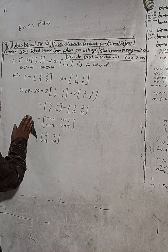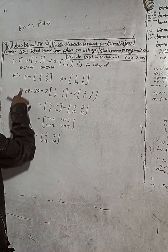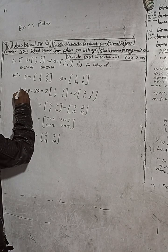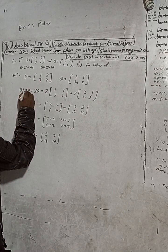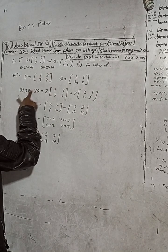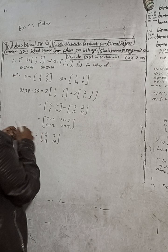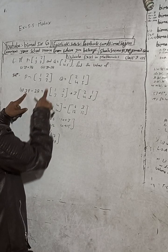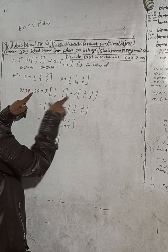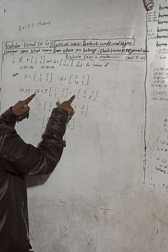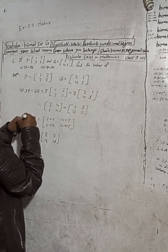Now we will find number two. Number two is 3P minus 2Q. So in place of P, put [1 2; 3 2], minus 2, and Q is [2 1; 4 5].